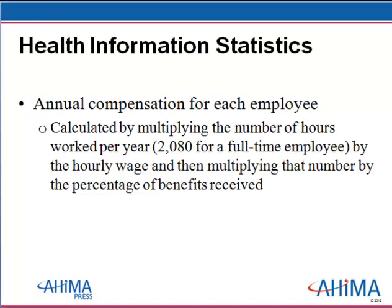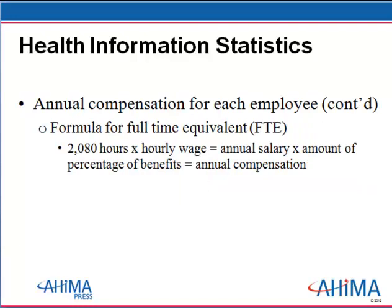One example where an HIM manager must make effective decisions is in regard to employee compensation and labor unit costs. The annual compensation for an individual employee is calculated by multiplying the number of hours worked per year — for a full-time employee, that's 2,080 hours — by the hourly wage, and then by the number of benefits received. Here is that formula: hours times wage, and the annual salary times the percentage of benefits gives the annual compensation per employee.